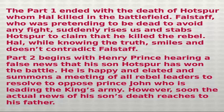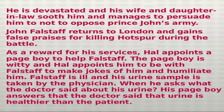Part 2 begins with Henry Percy hearing false news that his son Hotspur has won the battle. He is happy and summons a meeting of all rebel leaders to plan opposition against Prince John, who is leading the king's army. However, soon the actual news of Hotspur's death reaches him. He is devastated, and his wife and daughter-in-law soothe him and persuade him not to oppose Prince John's army. Meanwhile, John Falstaff returns to London and gains false praises for his supposed heroics in the battle. As a reward, Hal appoints a witty pageboy to serve Falstaff — really to make jokes at his expense and humiliate him.